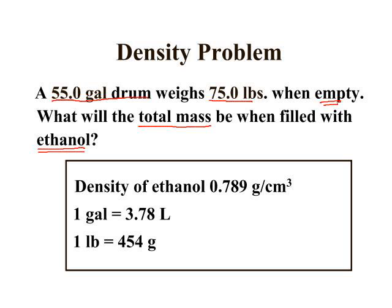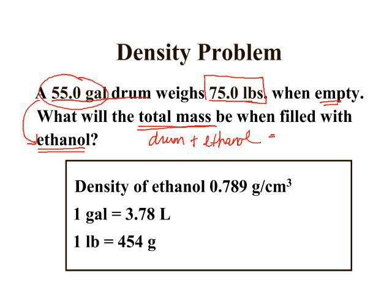You basically have 55 gallons of ethanol. You have a drum that weighs 75 pounds and you want to know the total mass. So you need to find the mass of the drum plus the ethanol in order to answer this question.